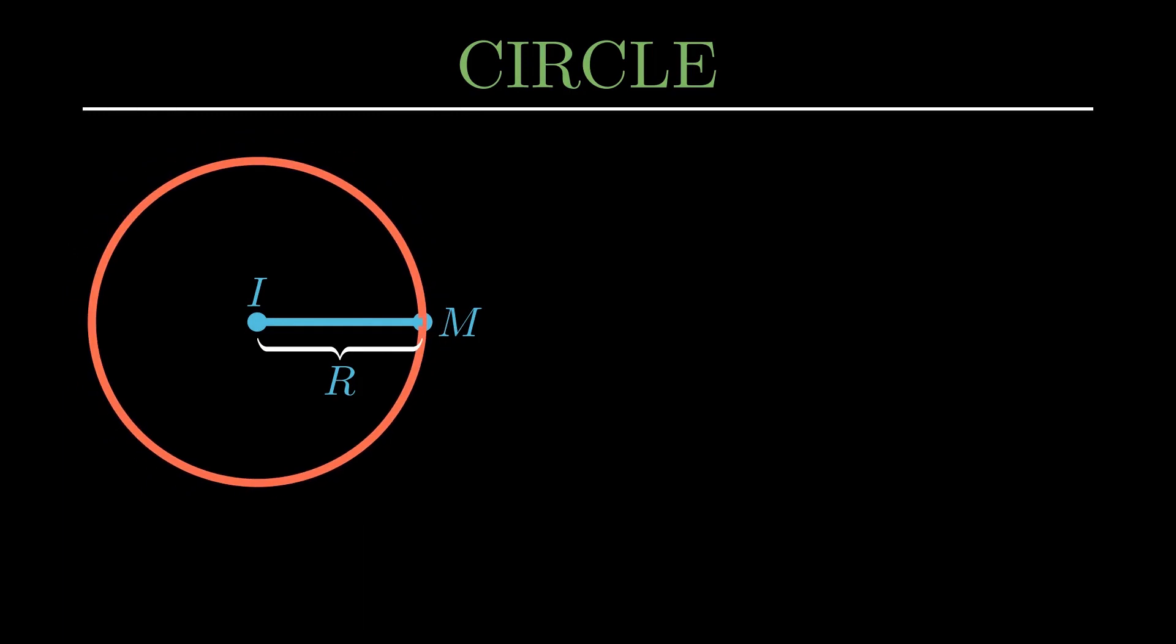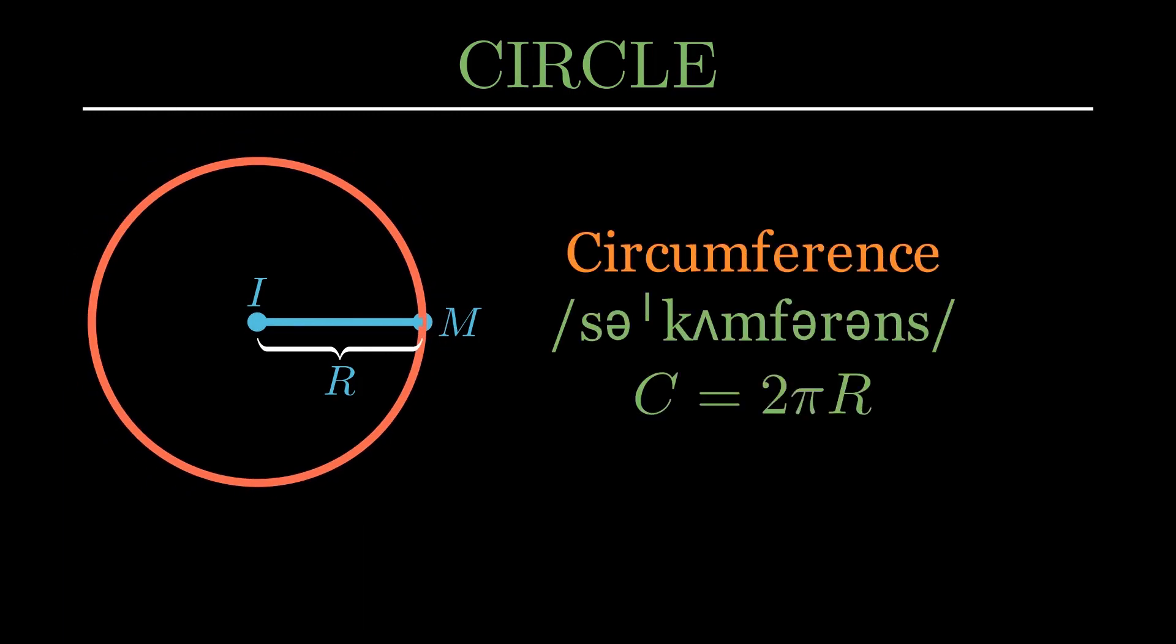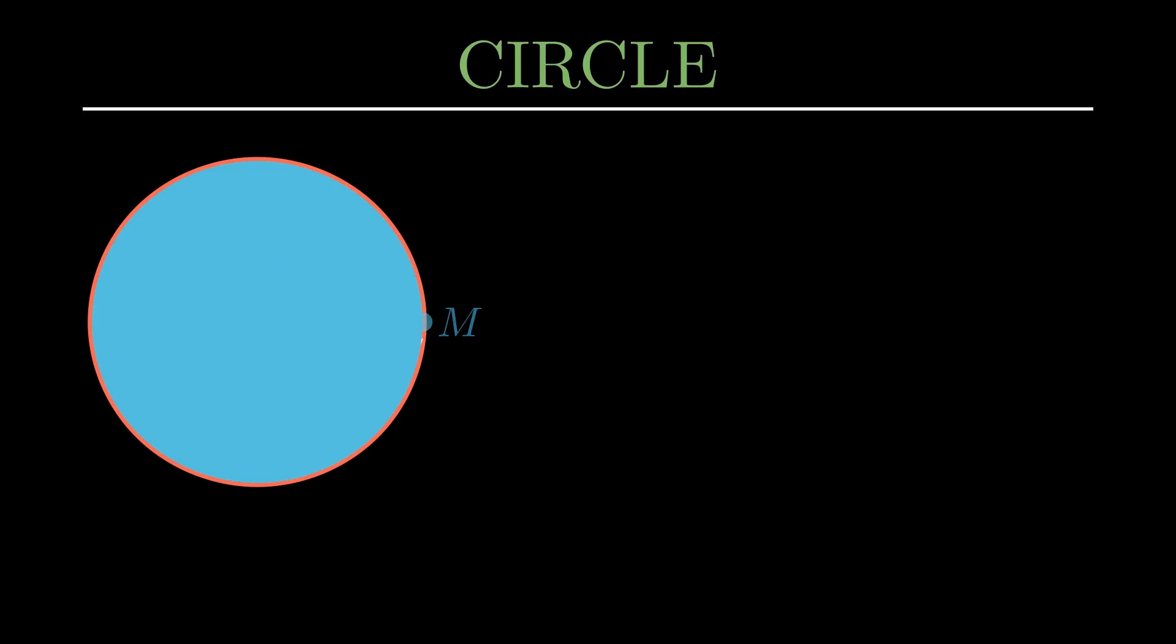The total length of the boundary of the circle is called circumference. It is the product of the constant pi and the diameter of the circle. The area of a circle is pi times the radius squared.